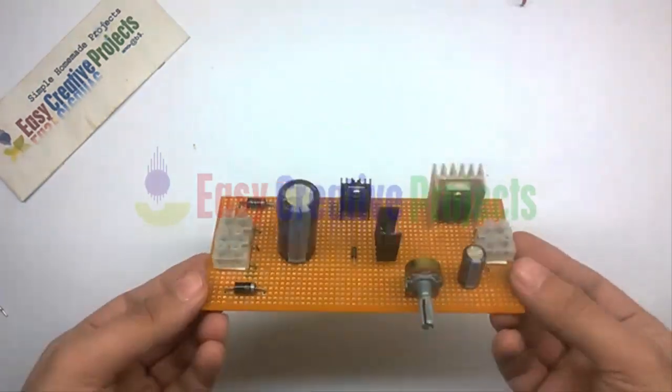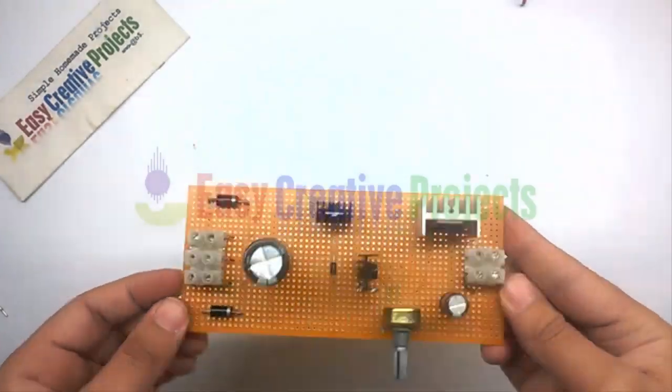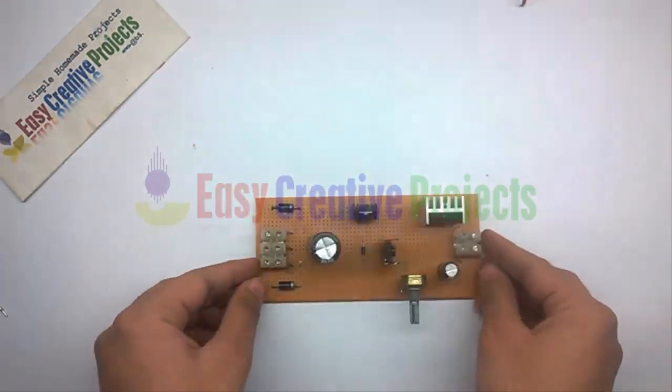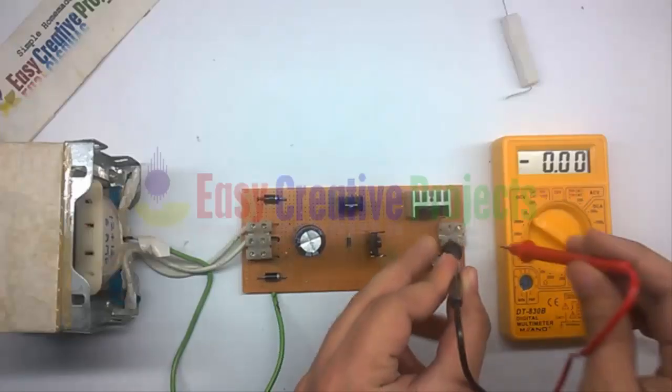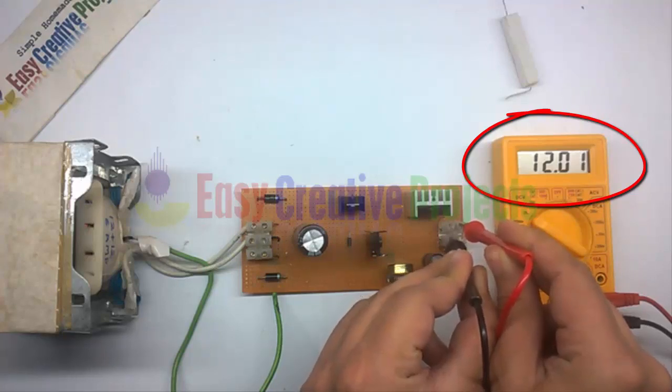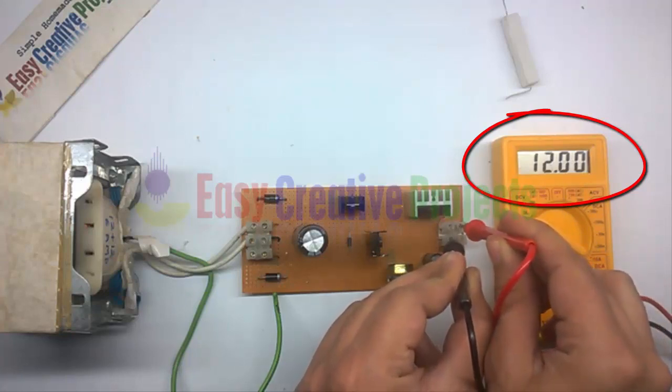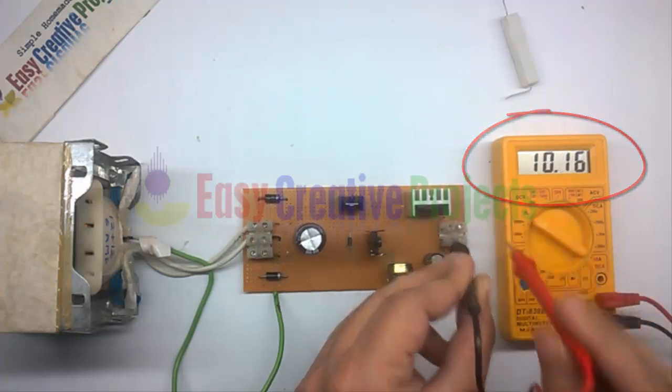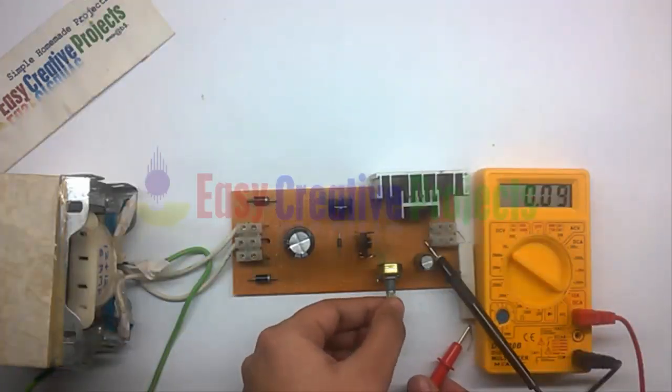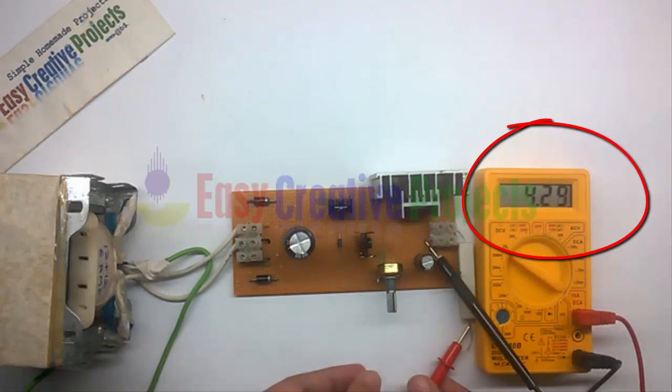Now connect all components on PCB board using circuit diagram. Project is ready for your test. You can see output voltage is 12 volt. You can adjust current using variable resistor as your desire.